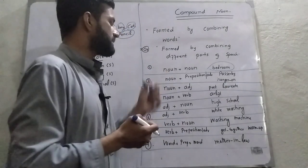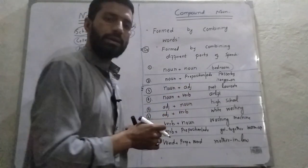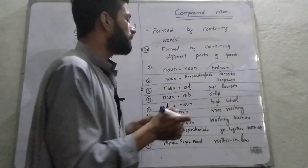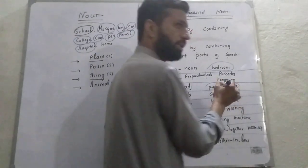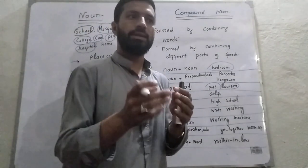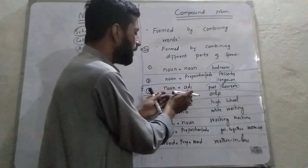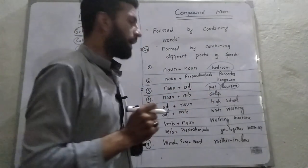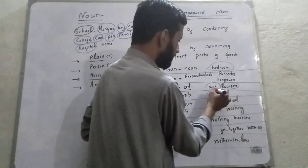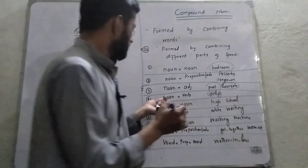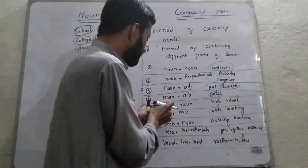The third case is whenever noun and adjective are combined, they form a compound noun — 'word' is used as a noun delivered as an adjective. The fourth case is whenever noun and verb are combined, they form a compound noun, like 'earlap' — ear is a noun and lip is a verb. So this also forms a compound noun.